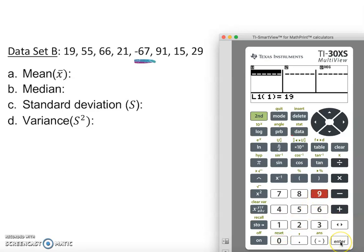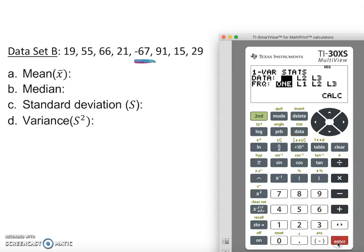I'm going to type the number in. This time we have a little bit bigger number. Of course we have to be ready for any situation. 19 enter, 55 enter, 66 enter, 21 enter, negative 67 enter, 91 enter, 15 enter, 29 enter. Now we're done. Now we do second data, enter bunch of time until we calculate.